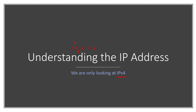A general IP address looks like m.n.o.p. Each of these components is called an octet. Why is it called an octet? Because computers do not understand numeric language like you and me — they understand only binary. Each component internally is 8 bits in binary, and that's why it is called an octet.